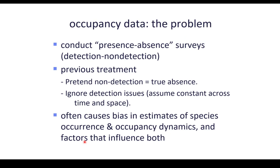Here's the basic problem we're going to address with occupancy data. You go out and conduct what's traditionally been called a presence or absence survey. Given where we are in the course, we should understand that presence or absence is more accurately referred to as detection or non-detection. If you observe the presence of a species in a location, you know it's there — you detected it. If you don't detect it, we know there are two interpretations for an absence: it's either truly absent, or it appears absent because you didn't detect it. Presence or absence terminology stems from island biogeography — MacArthur and Wilson — and still predominates in the classic ecological literature, but we really ought to replace it with detection and non-detection.